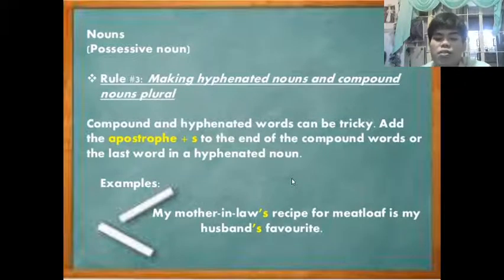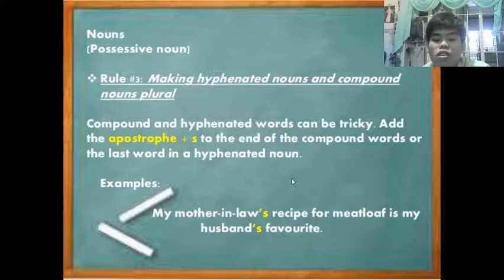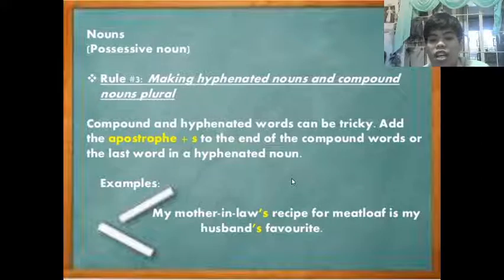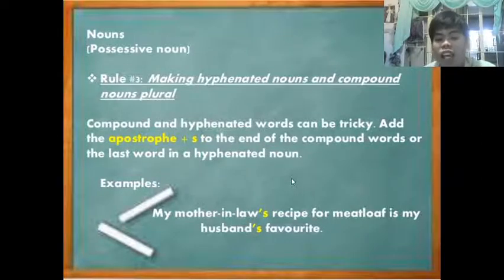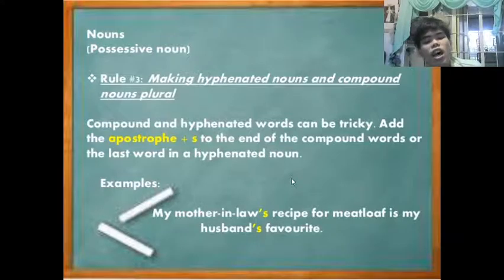The next rule is making hyphenated and compound nouns possessive. Similar to the first rule, you just need to add an apostrophe and 's'. For example: 'My mother-in-law's recipe for meatloaf is my husband's favorite.'